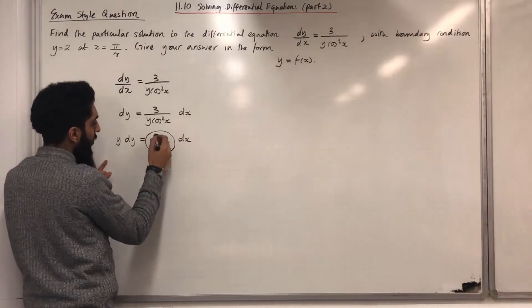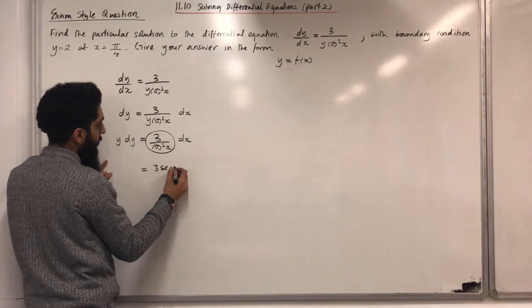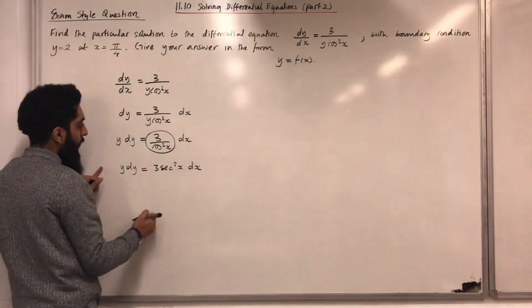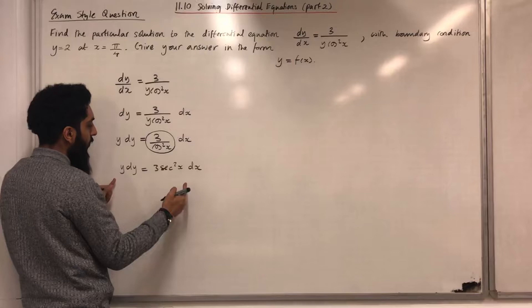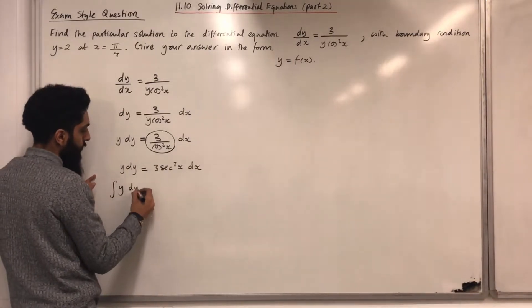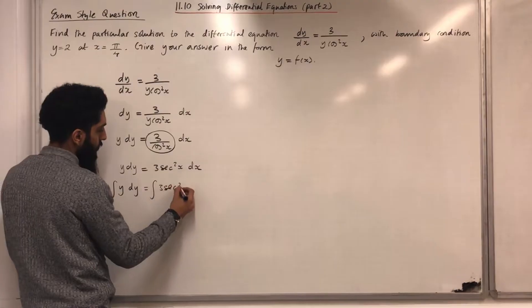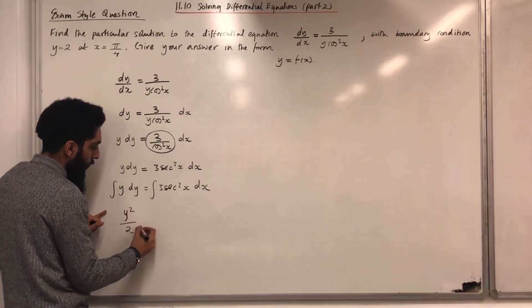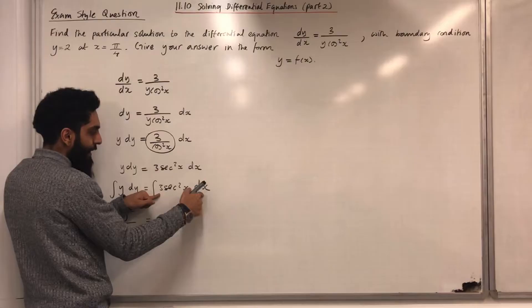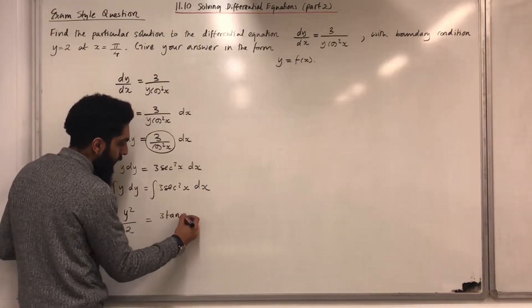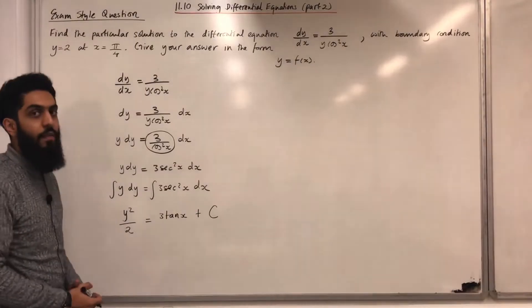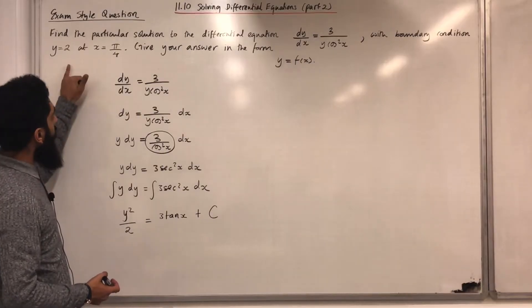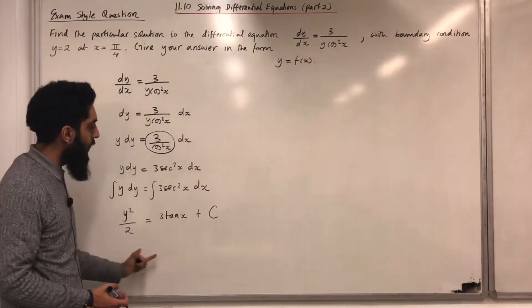Now 3 / cos²x is equivalent to 3 sec²x. So I have y dy = 3 sec²x dx. I can get rid of the differentials on both sides by integrating both sides. The integral of y dy is y²/2. The integral of 3 sec²x dx is 3 tan x + c, where c is the constant of integration.